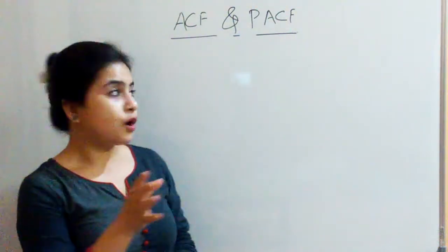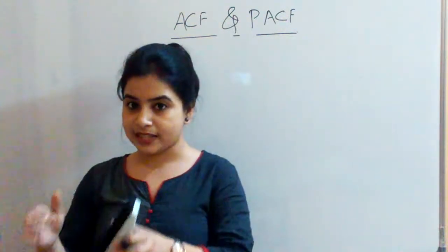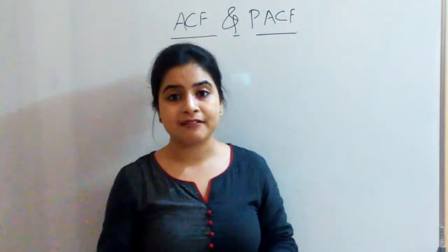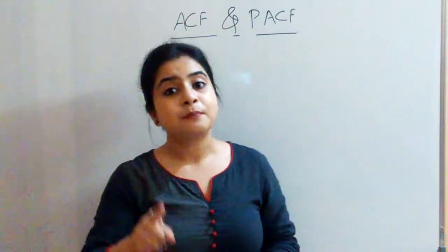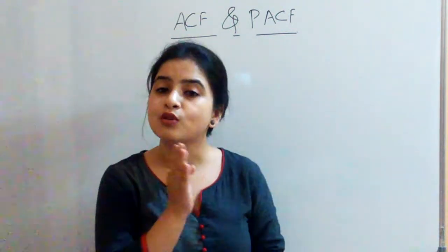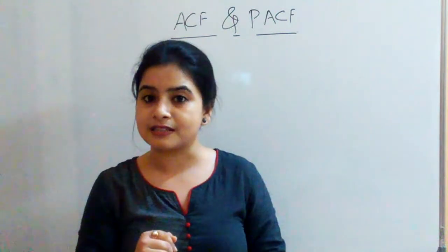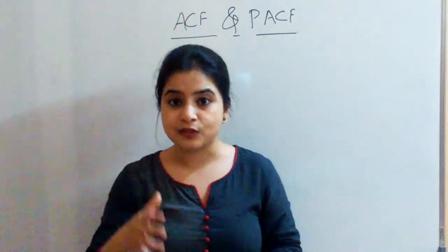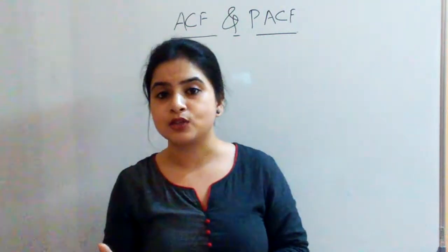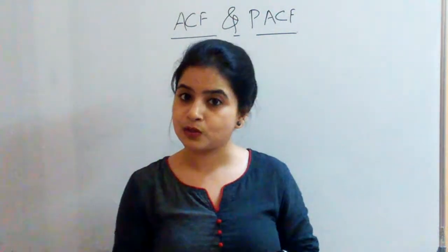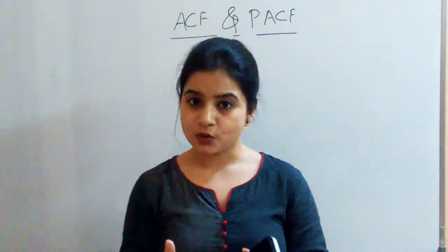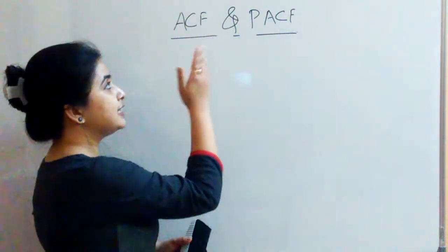If the process is mentioned that yt follows an AR process of order p, or MA process of order q, or ARMA process of order pq, we don't have any problem running our regression. But the problem arises if we are unaware of the stochastic process — that means what type of process we are dealing with. So to identify what type of stochastic process we are having, the identification is done by the autocorrelation and the partial autocorrelation functions.